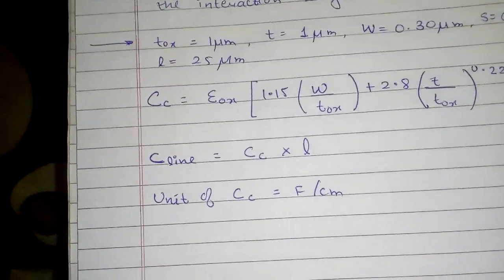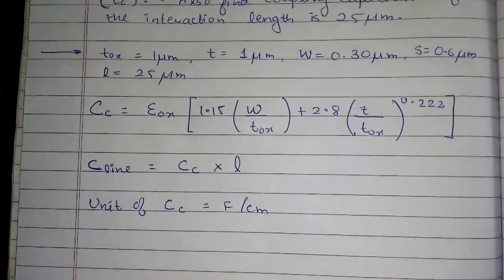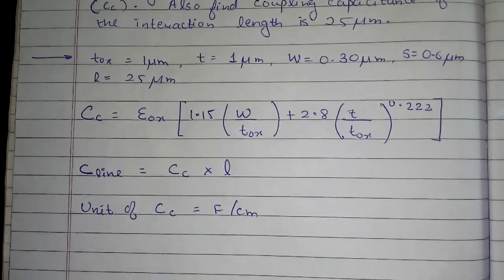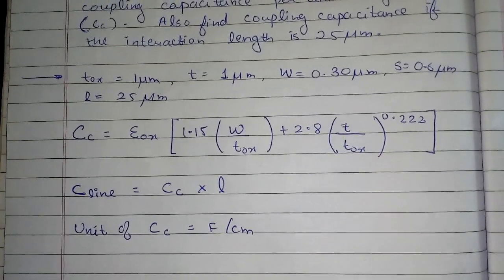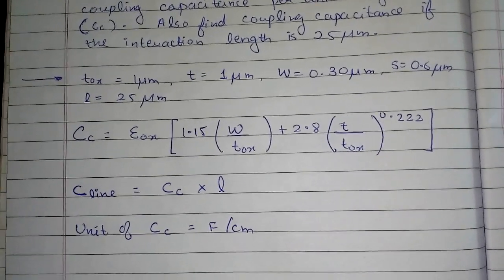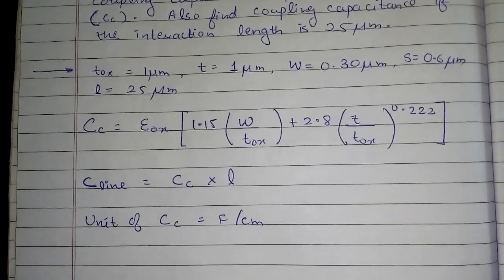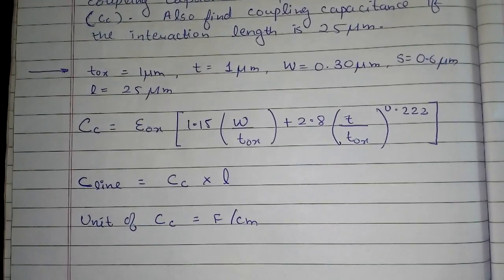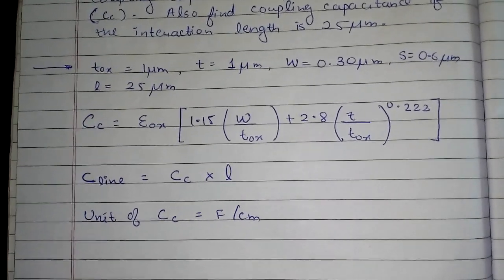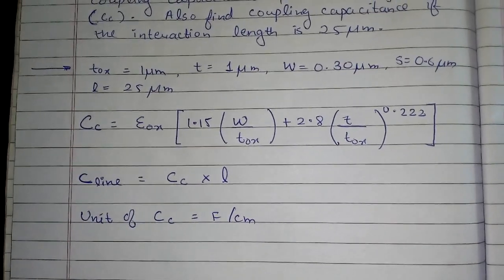Now whatever formula that you see anywhere else, in any other book, is wrong. This is the formula from a reference book, John P. Uyemura, and any other formula that you see anywhere else is wrong. So now you have to just substitute the values.